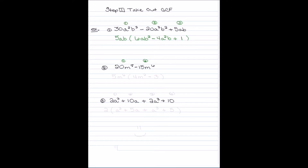For the second example it has two terms. The GCF is going to be 5 and I have 6 M's in common, so I put M to the 6th. Inside the parentheses I'm left with 4M squared minus 3. Again, distribute to see if you get the original back. The GCF in this one is 5M to the 6th.